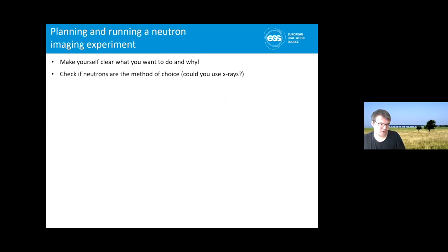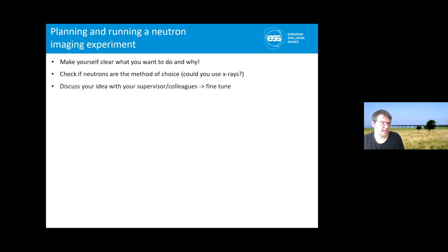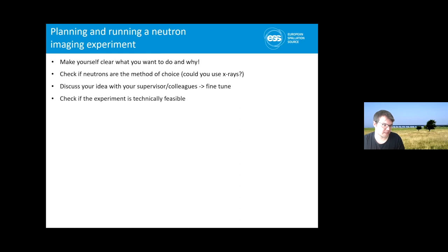Check if neutrons are the method of choice — that also just came up in this question. Why you need neutrons and not x-rays, for example because you could detect hydrogen inside metals. Discuss your idea with others, either your supervisor or colleagues, bounce ideas back and forth, and then fine tune your idea for an experiment.